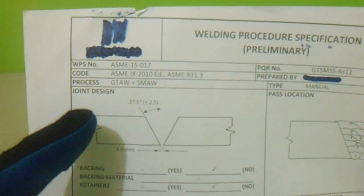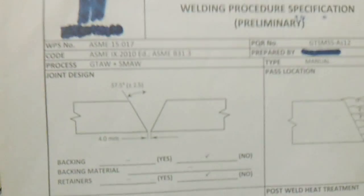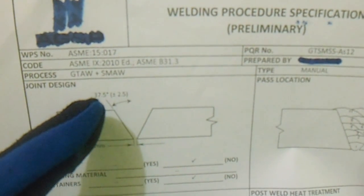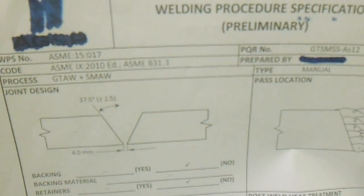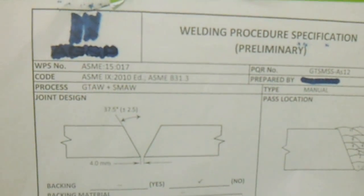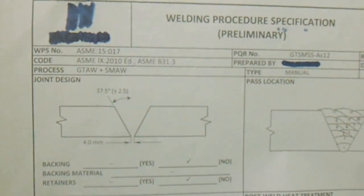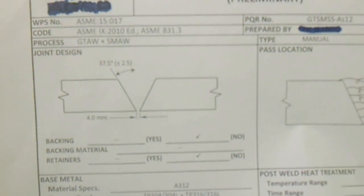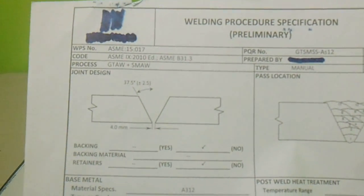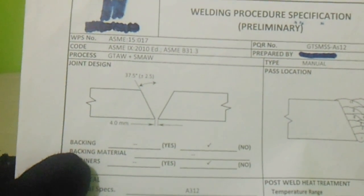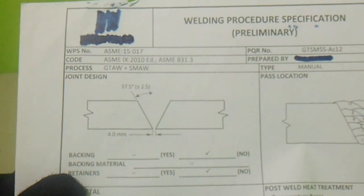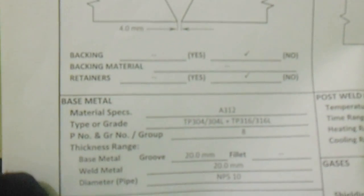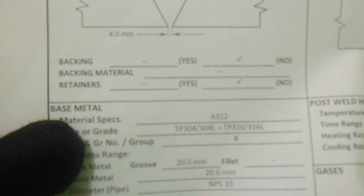From this WPS we have a joint design. From this joint design we have a standard bevel which is 37.5 degrees, positive or negative 2.5 degrees. We also have a gap of 4 mm. And we also have backing — this backing is none — and also backing material retainers.